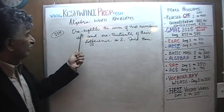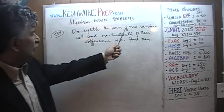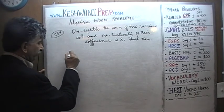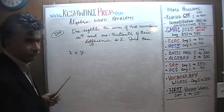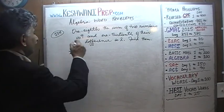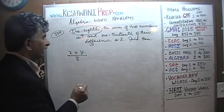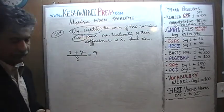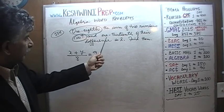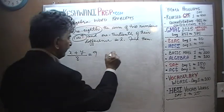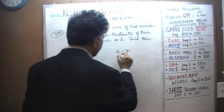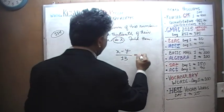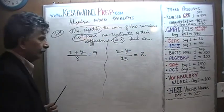It says one-eighth the sum of two numbers is 9. So that's our first equation. Let's call these two numbers X and Y. If you take their sum, it says one-eighth of their sum equals 9. That's our first equation. They go on to tell us that one-thirteenth of their difference, so if you take their difference X minus Y, and if you take one-thirteenth of that difference, we are told is 2.